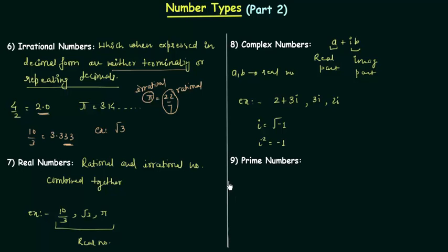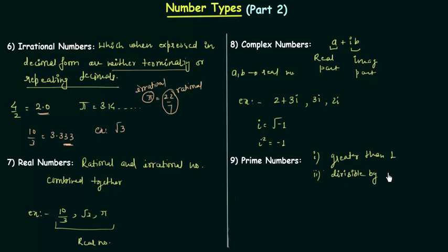The ninth type is prime numbers. A prime number is a number greater than 1 — that is the first condition. The second condition is that it is divisible by 1 and itself only, and not divisible by any other number. If a number satisfies these two conditions, it is a prime number.